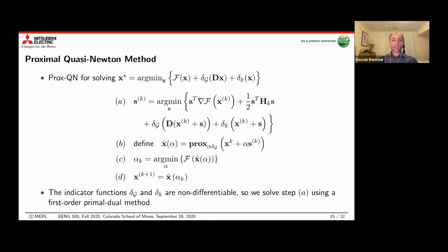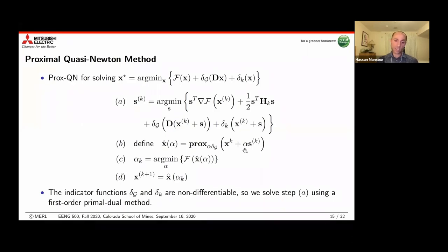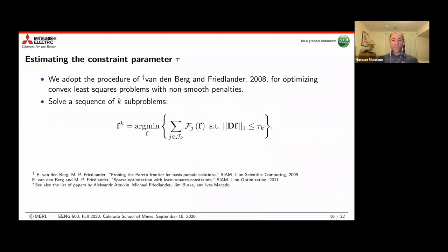Instead, we formulated an approach that ensures the descent direction always satisfies the constraints. We set up the quasi-Newton problem with constraints included in the objective while searching for the descent direction, using a first-order primal-dual method to compute the descent direction s. After that we compute the line search step size that monotonically minimizes the objective function and iterate. This ensures the descent direction satisfies the constraints and remains a quasi-Newton descent direction. This addresses both understanding the optimization landscape and using an efficient solver.